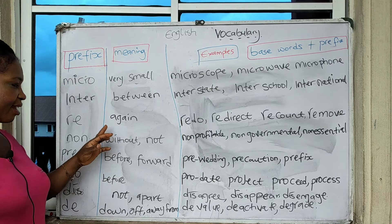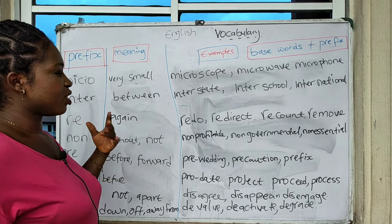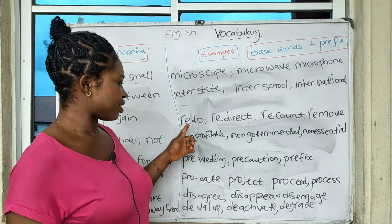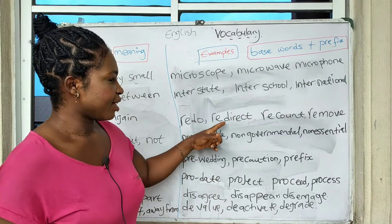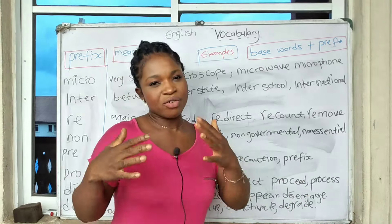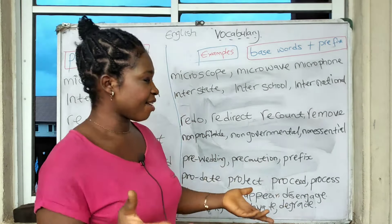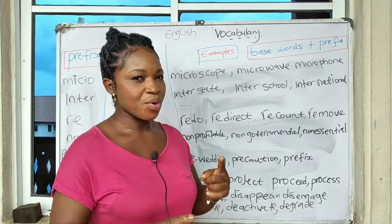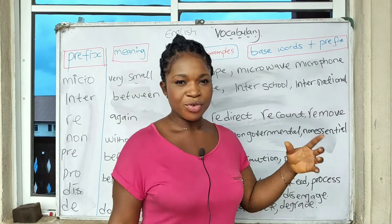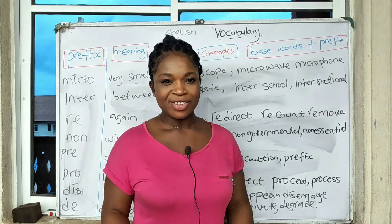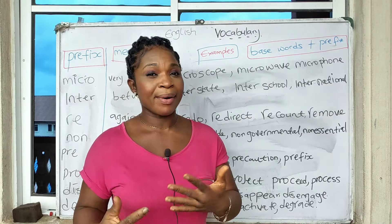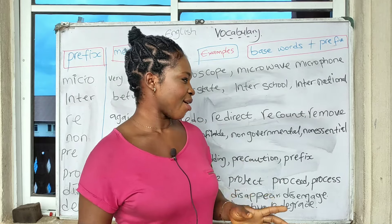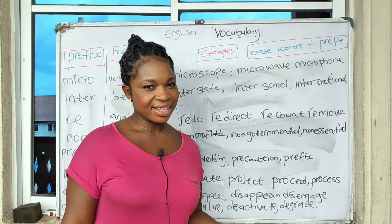The prefix 're' simply means again. So if I say do something and you did it, and I want you to do it again, I say 'redo it.' You can say 'redirect' — you directed somebody and now you want to redirect that person. You can say 'recount' — you counted and now you want to count again. So 're' changes a base word; for instance, 'direct' becomes 'redirect,' 'count' becomes 'recount.'